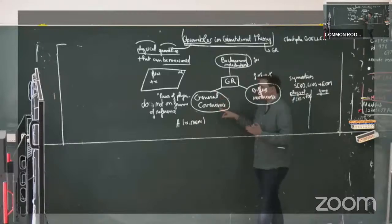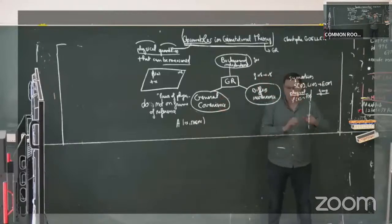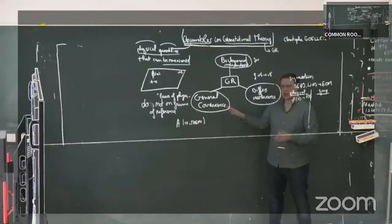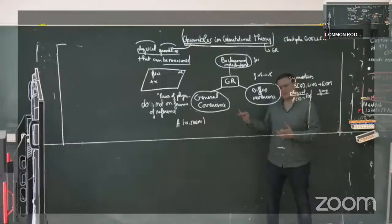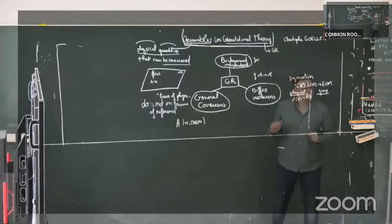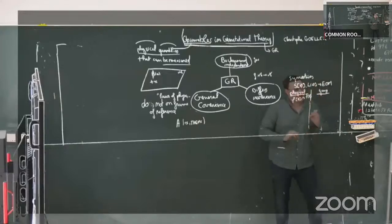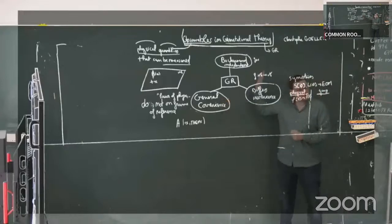The distinction is somewhat like passive versus active diffeomorphisms. What we want is to promote everything to be fully active. The exact issue is that you still have something which is independent of the field — which is non-dynamical. The observable, in this sense, can only be physical if it is either constant on spacetime or non-local, depending on a region of spacetime rather than a point.